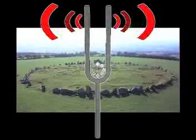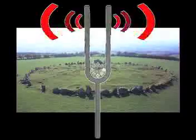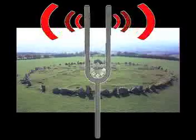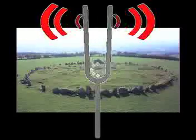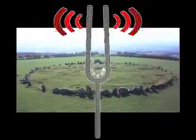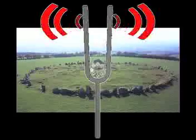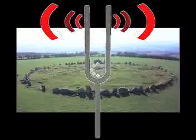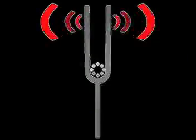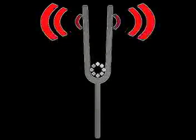Fluid in the cochlea is set in motion. The vibrations are detected by nerve fibers, which transmit signals to the brain through the auditory nerve. The nerve fibers are frequency sensitive — the lowest frequencies are detected by fibers at the deepest part of the cochlea.